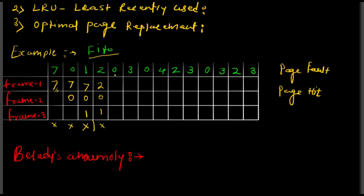Now 0 is required. Observe that 0 is already present in memory. We will not make any changes because the processor requires 0 and 0 is already in memory — it will be taken directly. This event, when a page is already present in main memory, is called a page hit. When the page is missing it is a page fault; when the page is present it is a page hit. We mark this as a page hit and do not write anything, making it easier to count page faults.